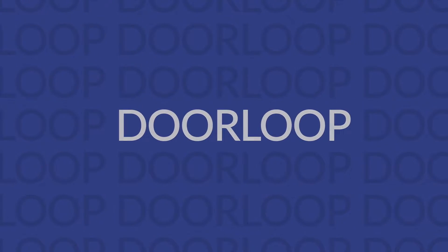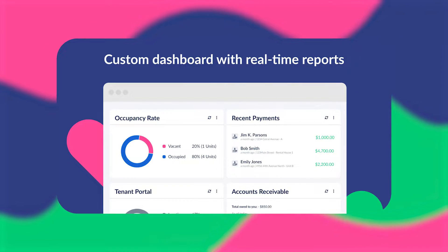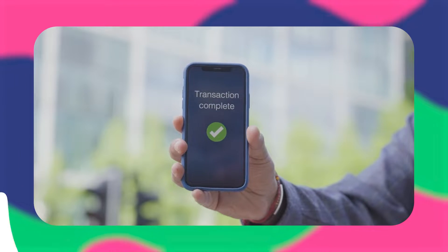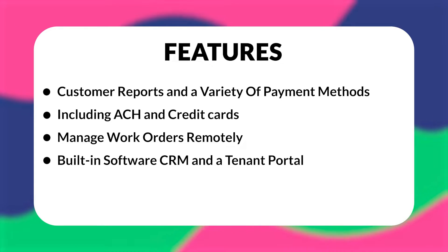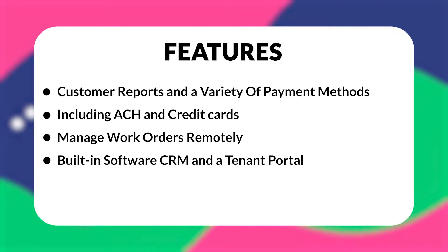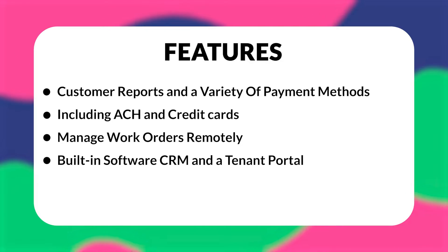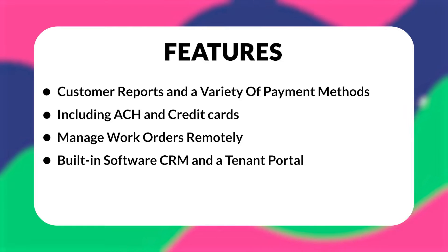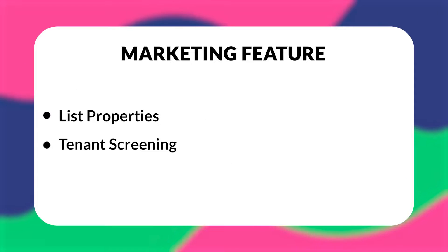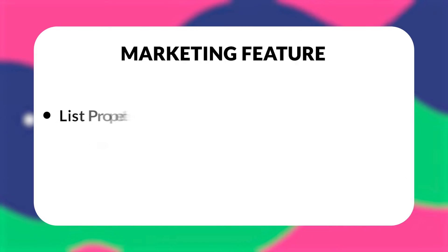First is Doorloop. It's a dedicated full-service rental property management software tool that can offer everything you need to streamline and optimize your property management or investing business. Designed to be highly intuitive and easy to use, Doorloop includes a full suite of features designed by property managers for property managers. It has everything you need for property accounting, including custom reports and a variety of payment methods including ACH and credit cards. You can manage work orders remotely, assign vendors to a job, edit work orders, and communicate directly with tenants. They have a built-in CRM and tenant portal to collect rent, offer rent insurance, and accept applications, plus an owner portal with reports and check printing, and marketing features for listing properties and tenant screening.